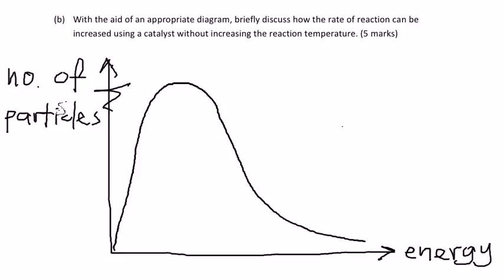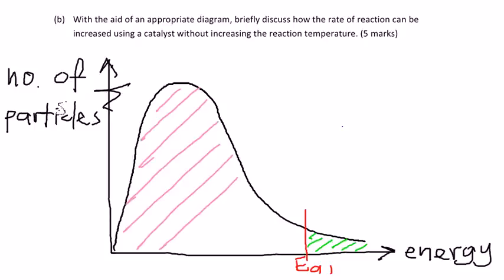So let's take our activation energy to be at the red line here at Ea1. The number of particles which will have sufficient energy to react will be particles that have greater energy than the activation energy, which is the green shaded part over here. And the particles that have insufficient energy to react is indicated by the pink shaded area.